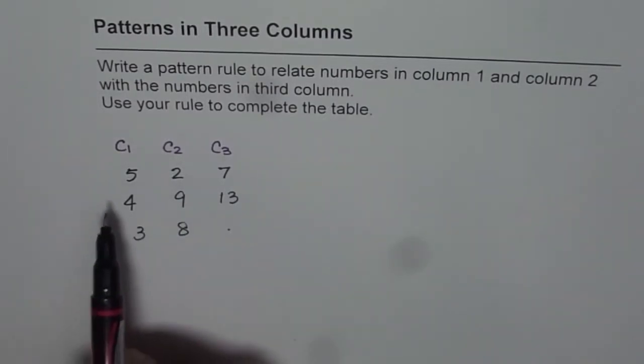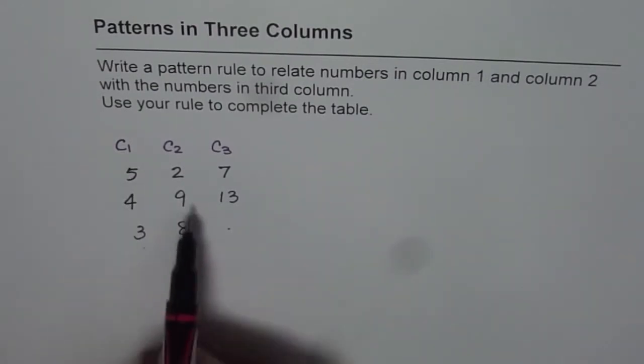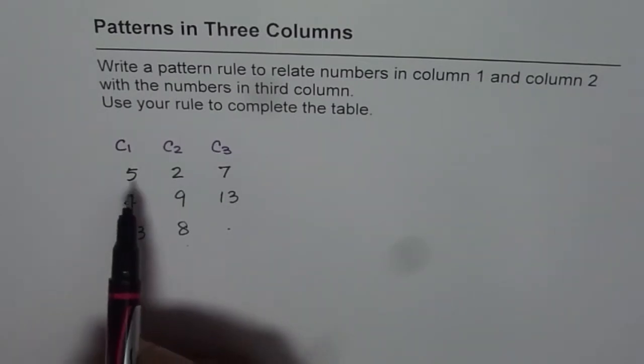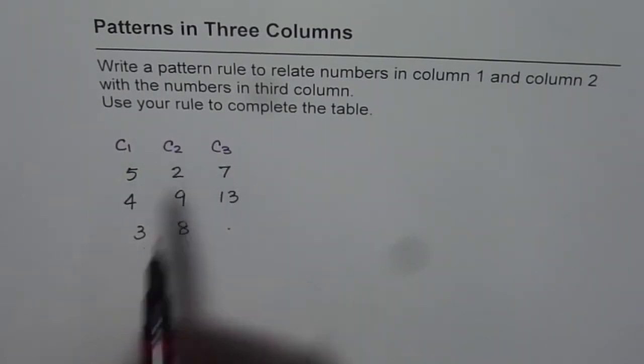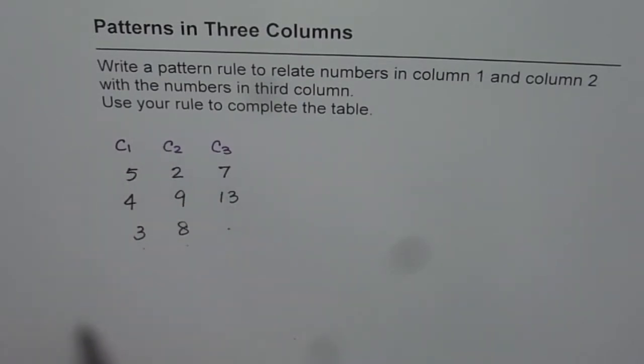So what we have here is a set of numbers and these are three different columns. Column one, column two, and column three. Somehow column one and two are related with column three. So combination of column one and two gives us column three. We have to find a rule which gives us the numbers in column three. So let's try to figure out.